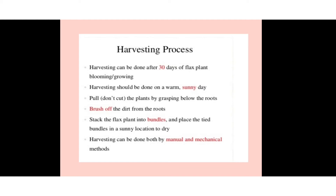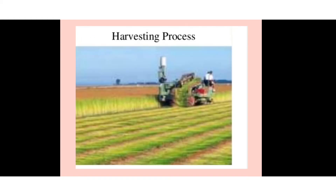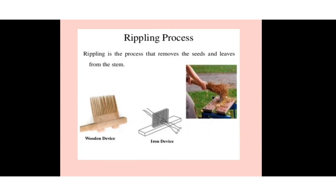Harvesting should be done on warm and sunny days. The plant is pulled by grasping it below the root — the whole plant is pulled rather than cut at the stem. The dirt from the root is brushed off. The stalks of the flax plant are tied into bundles and placed in a sunny location to dry. Harvesting can be done by both manual and mechanical methods.